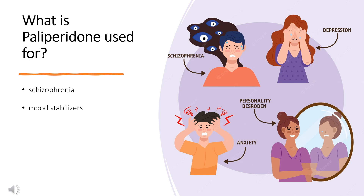What is palliperidone used to treat? As an oral extended-release tablet and a once-monthly extended-release suspension for intramuscular injection, palliperidone is indicated for the treatment of adults and adolescents with schizophrenia, and in the treatment of schizoaffective disorder in combination with antidepressants or mood stabilizers. Palliperidone is also available in both an every three-month and twice-yearly extended-release suspension for intramuscular injection for the treatment of schizophrenia.